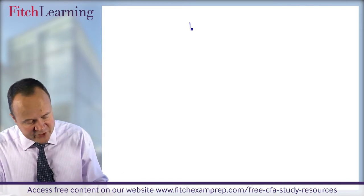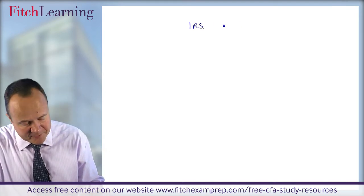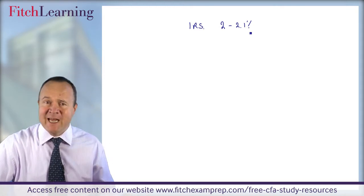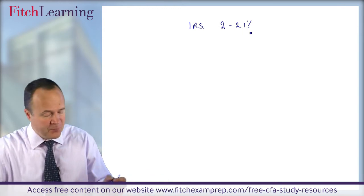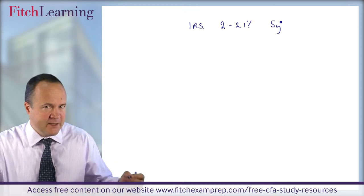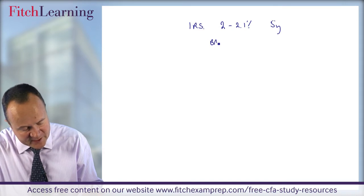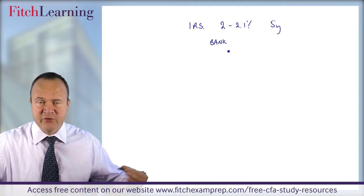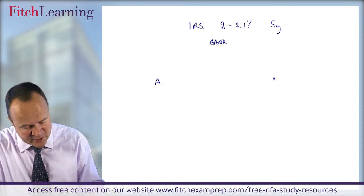Let's do a simple interest rate swap. Let's imagine the swap rates are 2 to 2.1% for a certain maturity - say five year, the tenure of the swap. There are going to be two parties: we'll have the swap desk, the bank in the middle, who tends not to take on the risk - they simply have two clients either side and they make the spread. Then we have client A and client B.